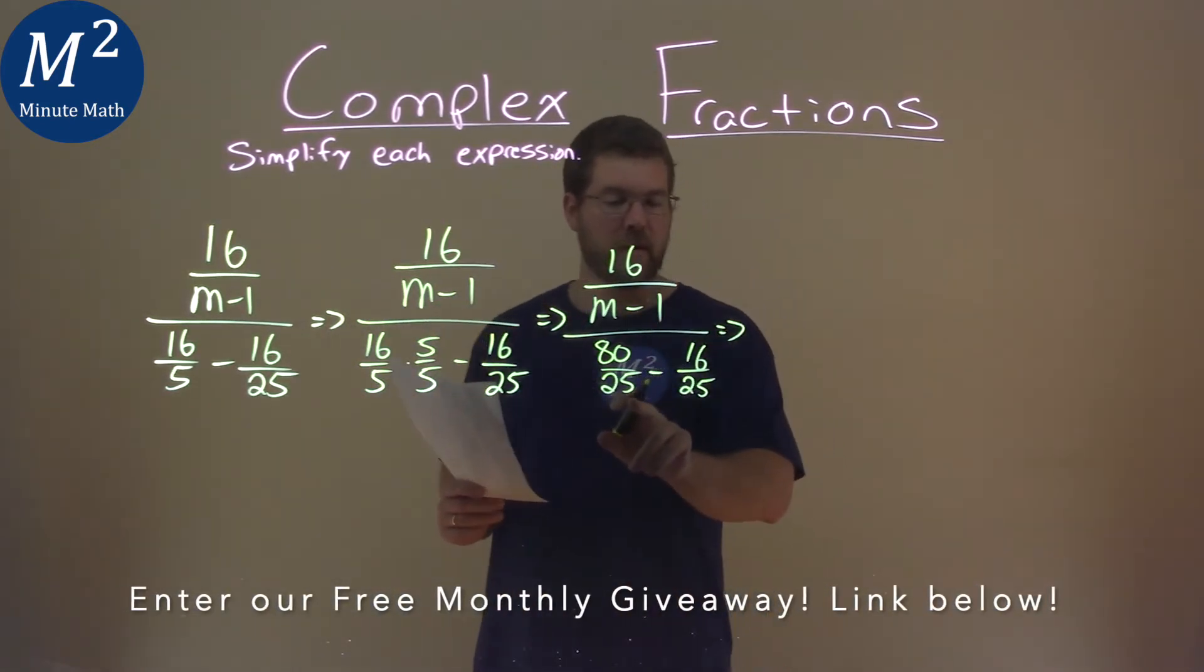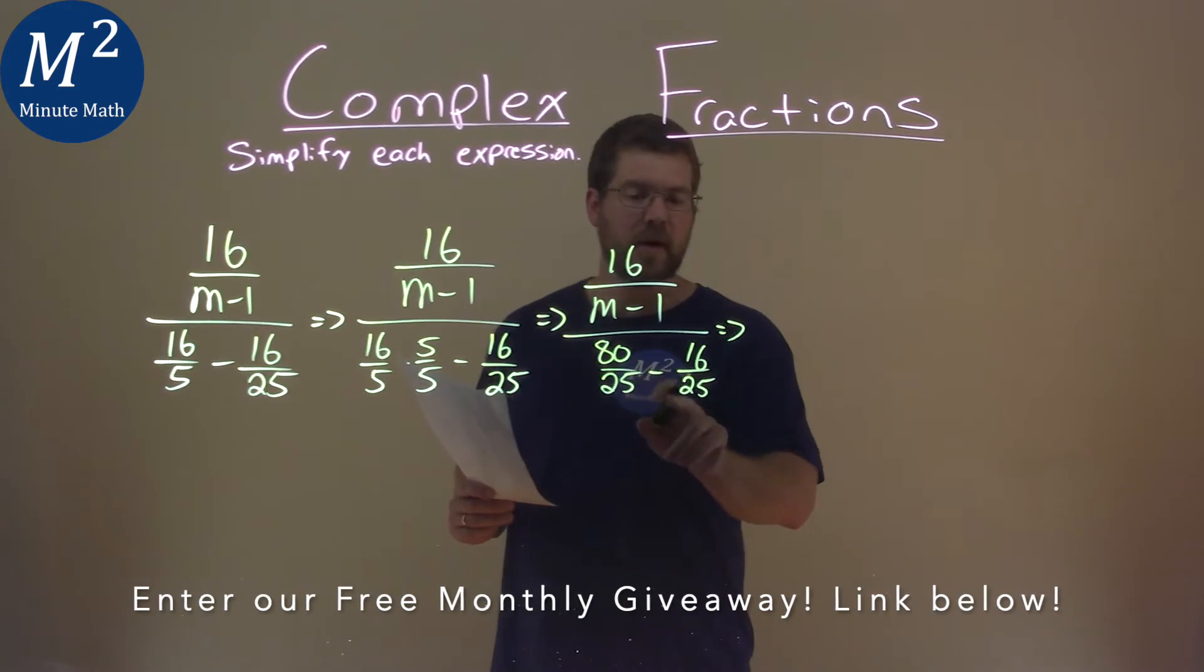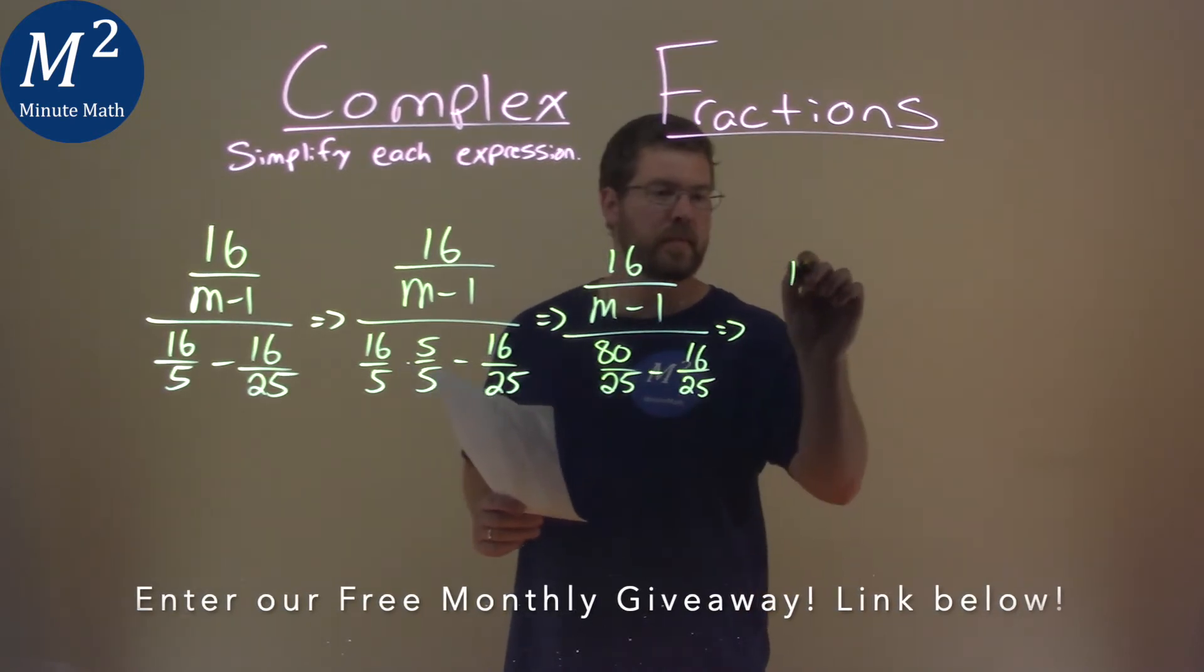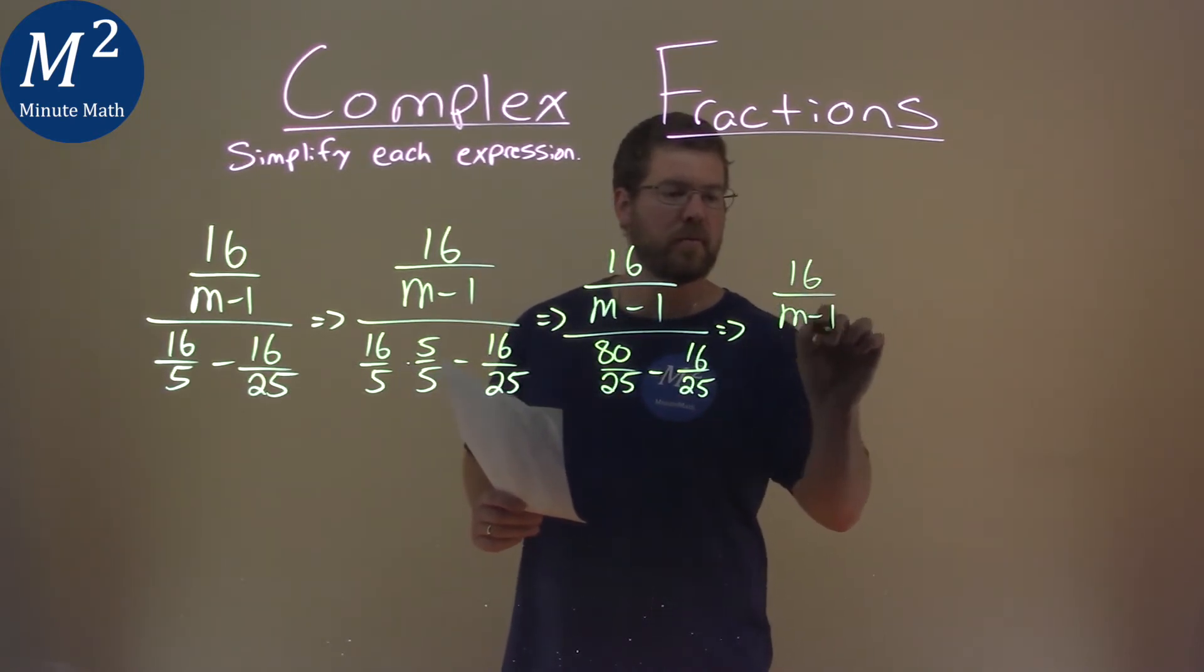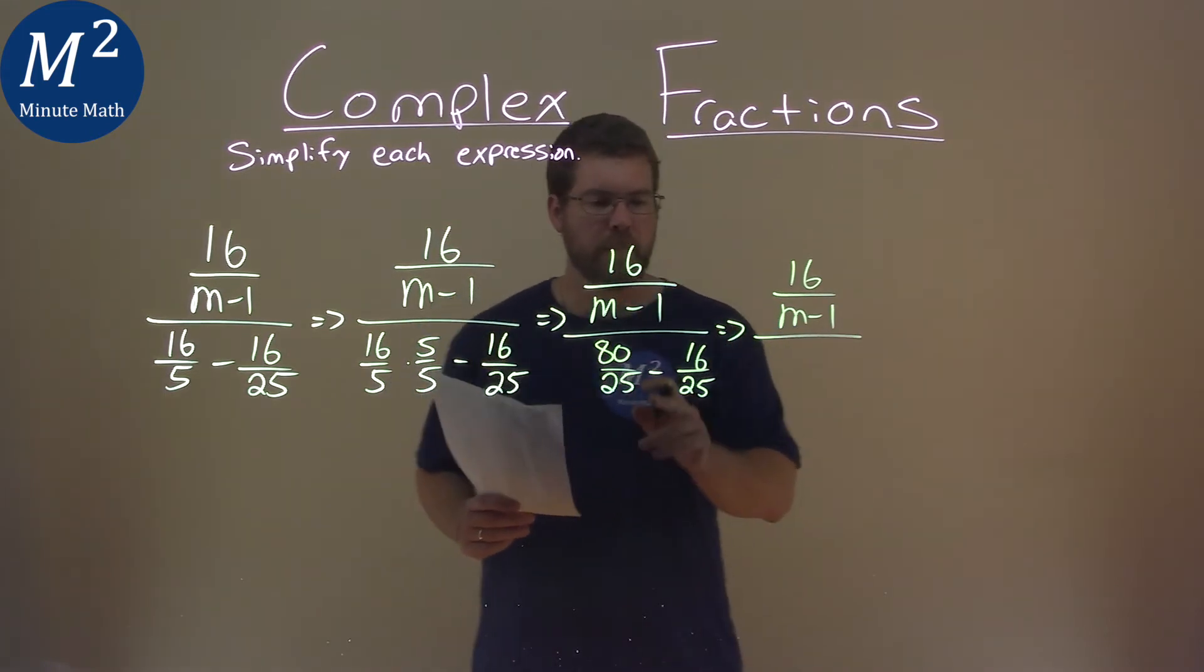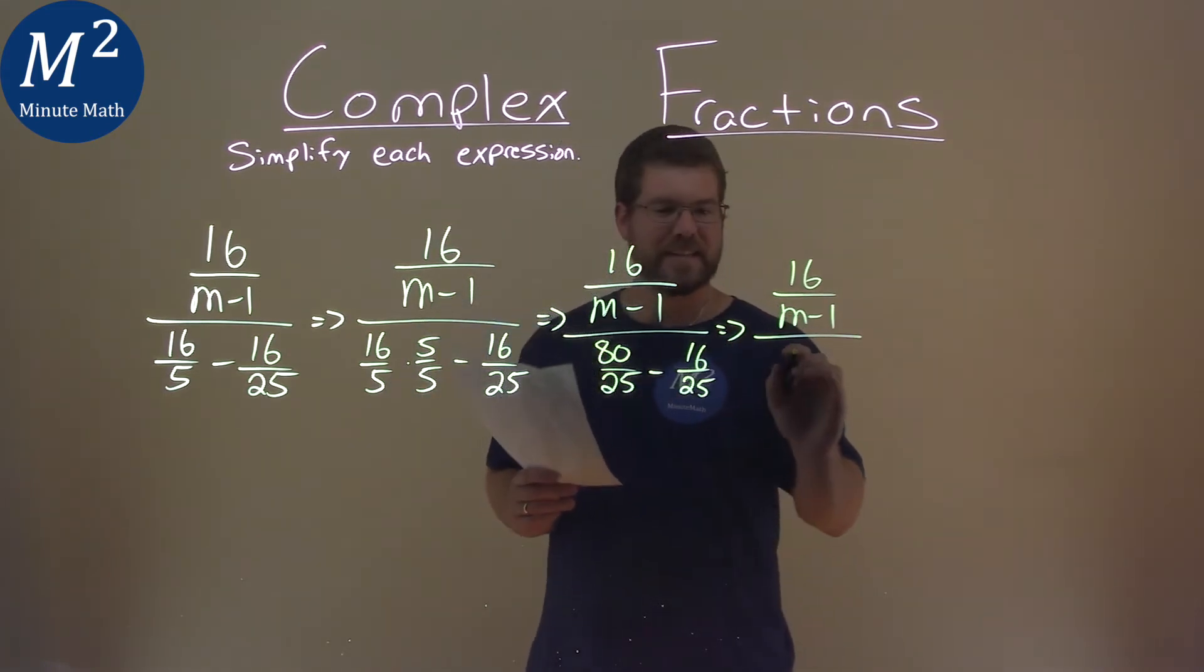Continuing on, we now have the same denominator of 25. We can subtract these two fractions: 16 over m minus 1, over, well, 80 minus 16 is 64, and that's over 25.